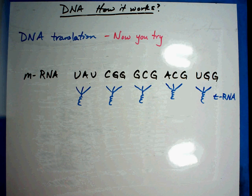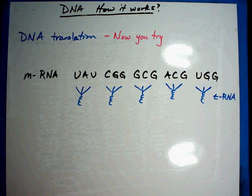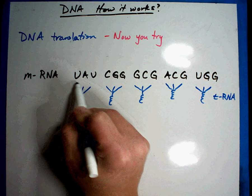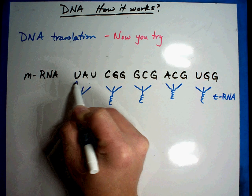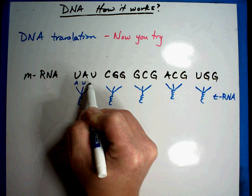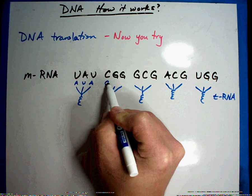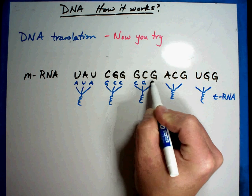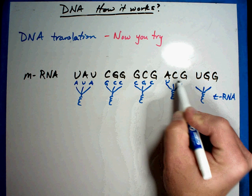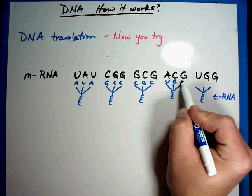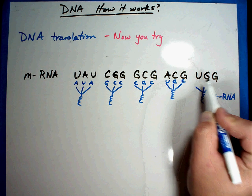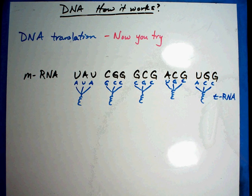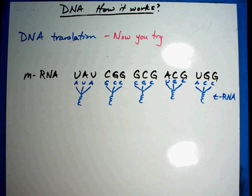Let's see how you did with your transfer RNA. First, with your transfer RNA, you had to figure out the connections that go in here. This would be A, U, A, G, C, C, C, G, C, U, G, C, A, C, C. Those would be the parts that actually hook to it.